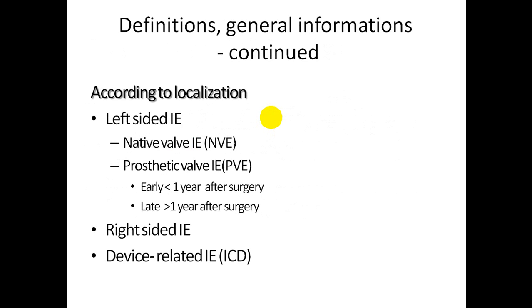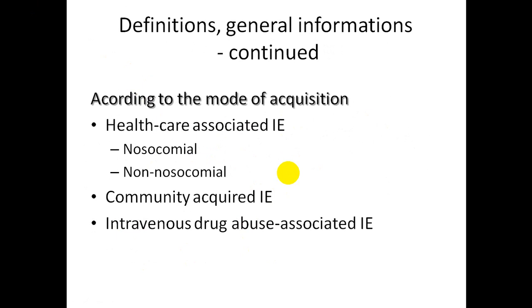Classification of infective endocarditis by localization: left side includes native valve and prosthetic valve endocarditis — prosthetic can be early (below one year after surgery) or late (more than one year), with different organisms. Right-side infective endocarditis and device-related endocarditis also exist. Classification by mode of acquisition includes healthcare-associated endocarditis and intravenous drug abuse-associated endocarditis.